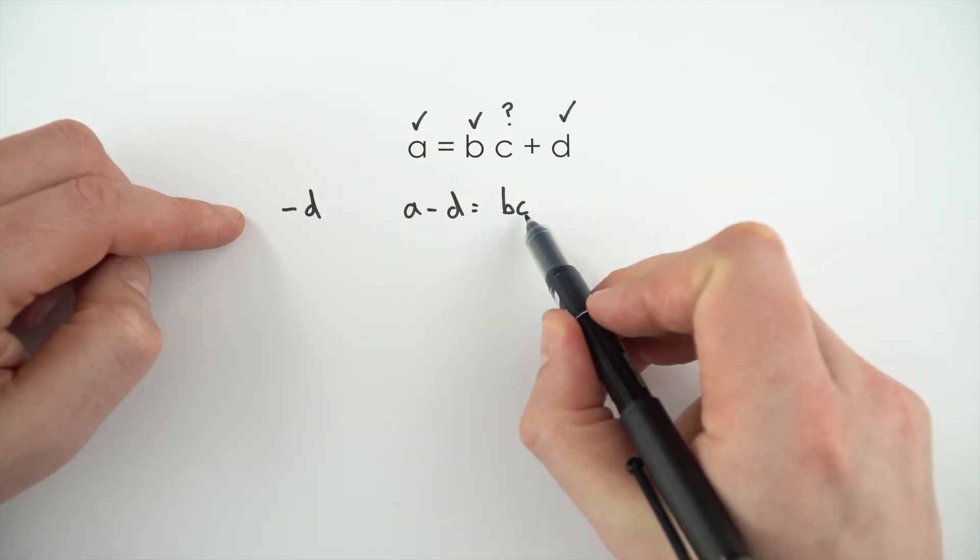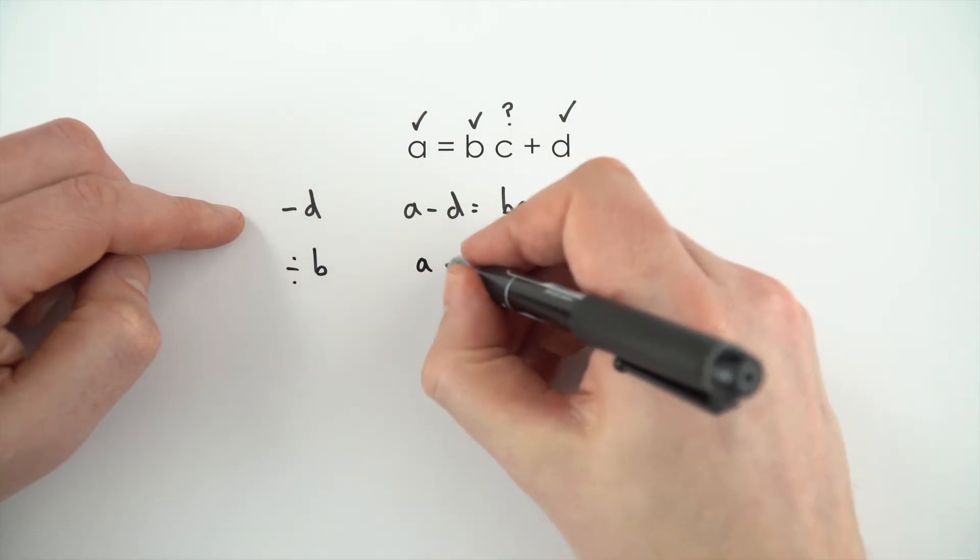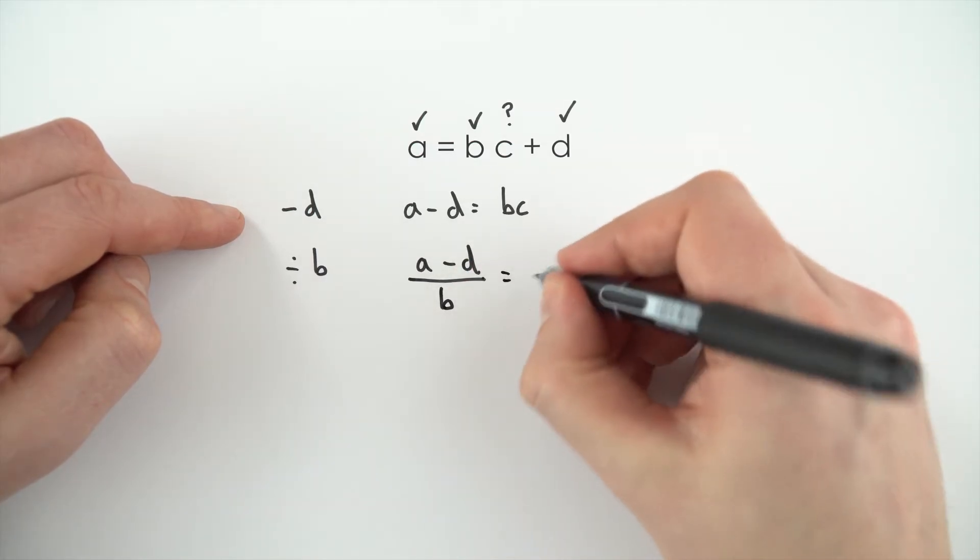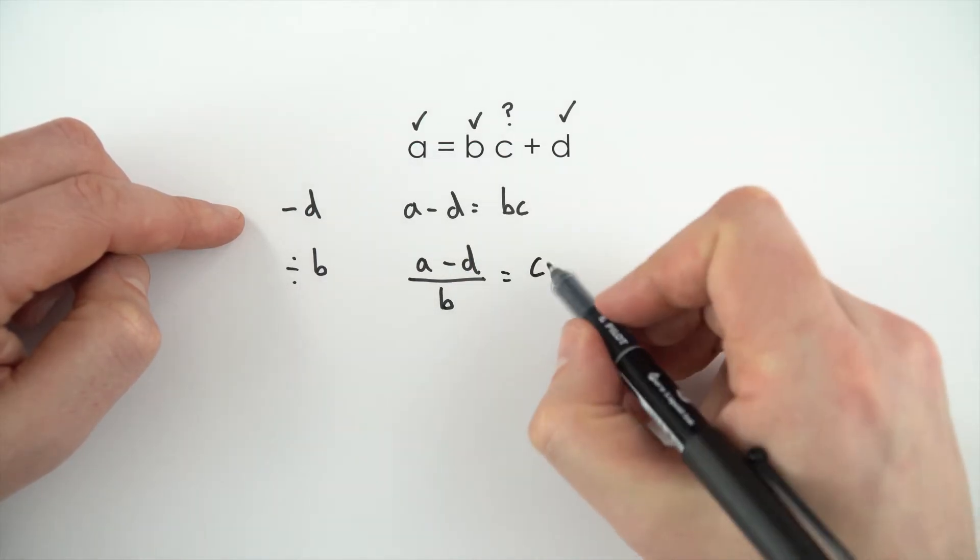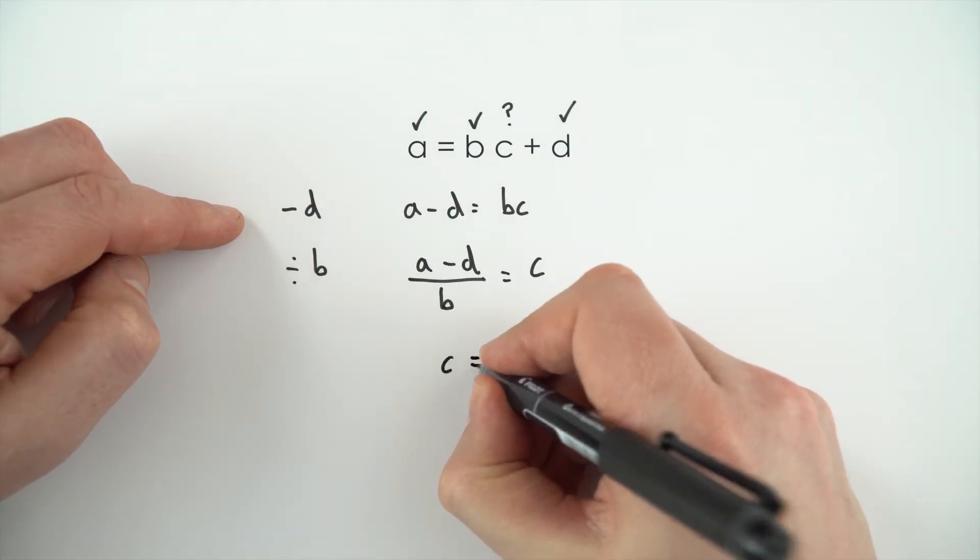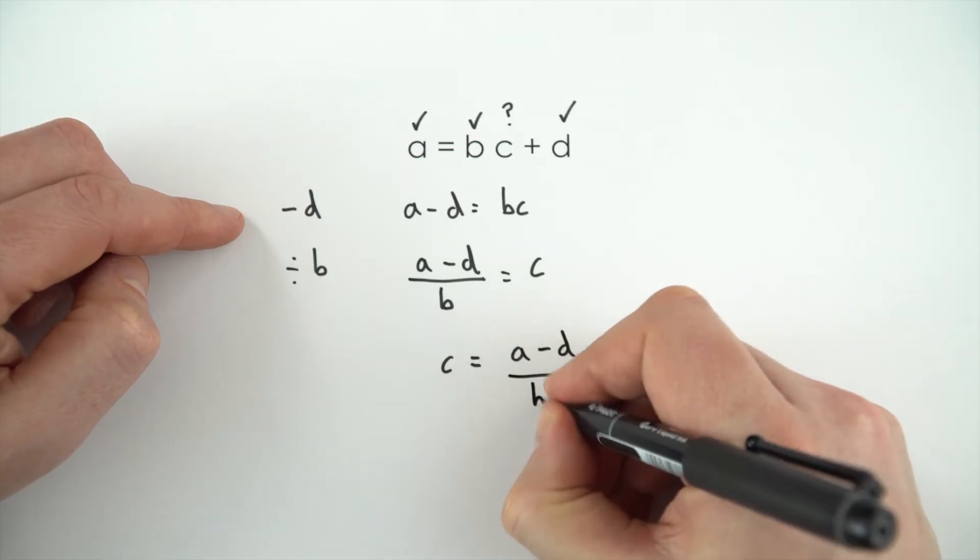Now the next thing we're going to do to get c on its own is divide everything by b, to say that a minus d divided by b is equal to c. So now I've got the c term on its own. I've just finished rearranging it by writing the subject on the left that c is equal to a minus d divided by b.